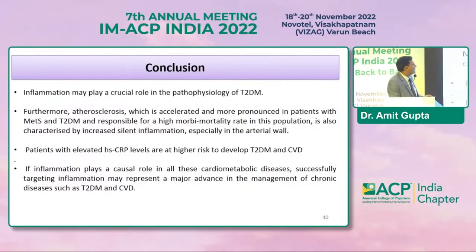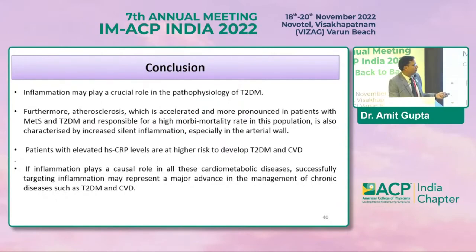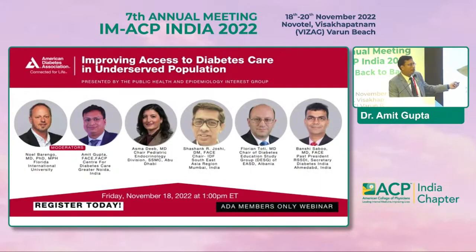In conclusion, inflammation plays a very crucial role in the pathophysiology of type 2 diabetes and, to some extent, type 1 diabetes. Atherosclerosis — accelerated in patients with metabolic syndrome and type 2 diabetes — is also characterized by increased silent inflammation, especially in the arterial wall. Patients with elevated HSCRP levels are at higher risk for type 2 diabetes and CVD. Developing successful therapeutic targets against these inflammatory markers can help with glycemic management. Please join tonight's ADA-organized webinar at 1 PM ET.